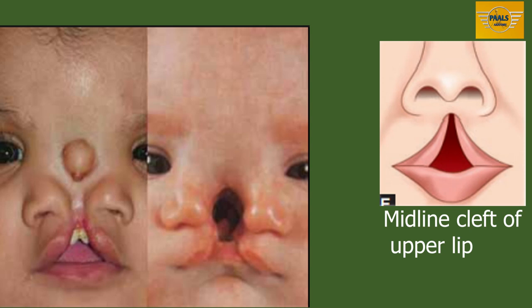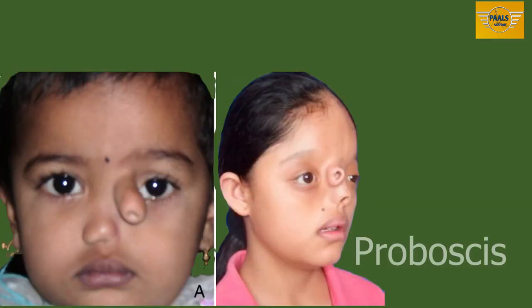Another anomaly associated with the formation of the nose is known as proboscis. Proboscis is a congenital tubular nose seen coming out from just below the forehead.